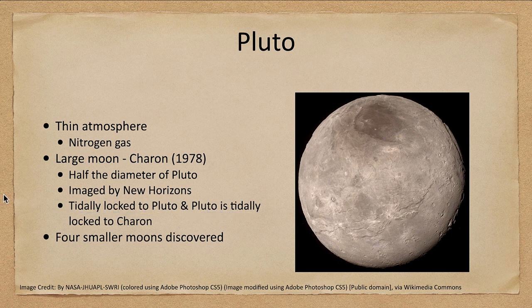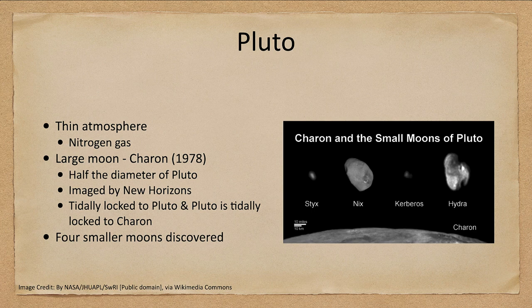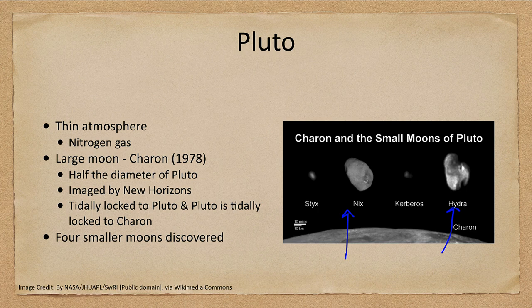Pluto also has four smaller moons. Nix and Hydra were known prior to New Horizons leaving Earth, while Styx and Kerberos were discovered en route — not by New Horizons but by imaging from Earth. Because the orbit had already been set, New Horizons couldn't get close to all of these, which is why some have less detailed images than others.